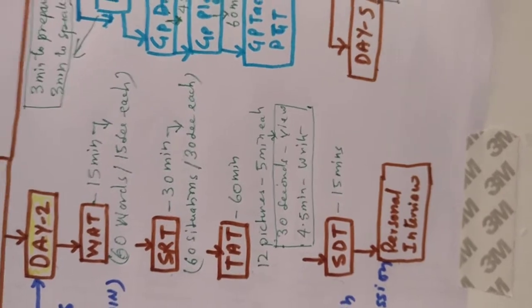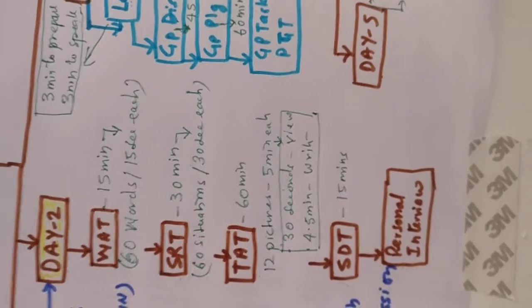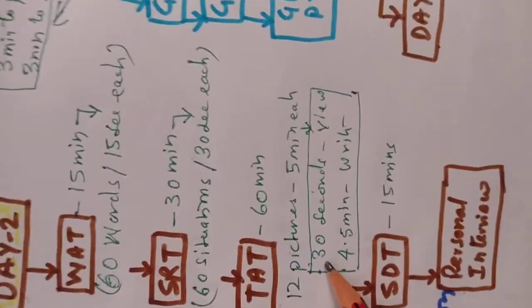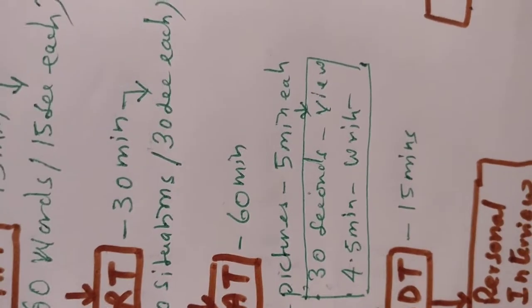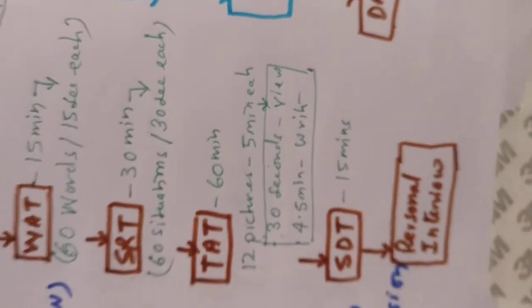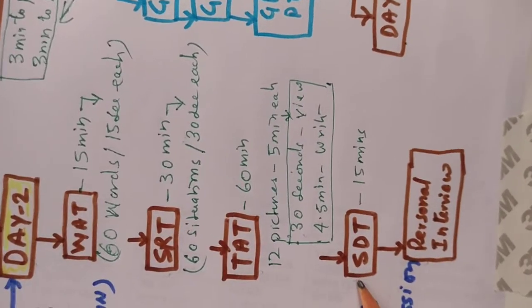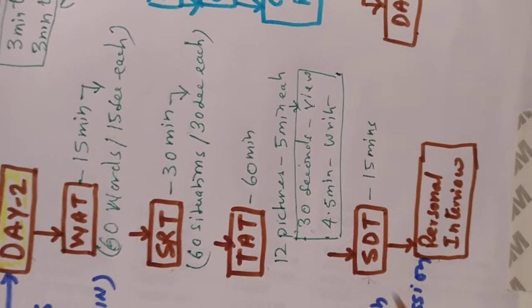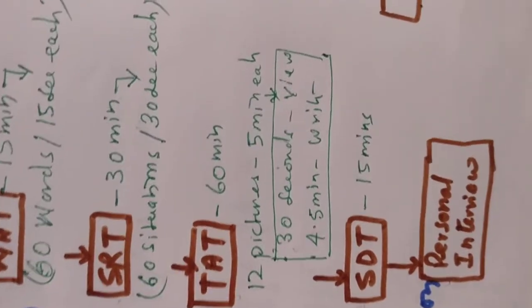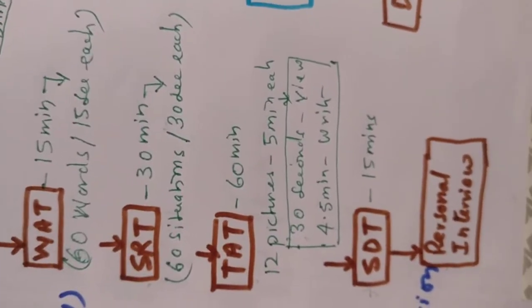TAT - you are shown 12 pictures. Pattern is same as PPDT. So 30 seconds you get to view the picture and 4 minutes to write.